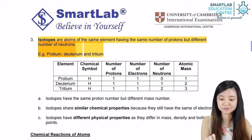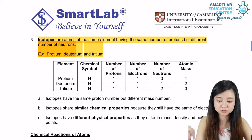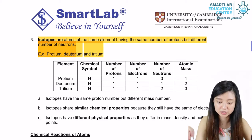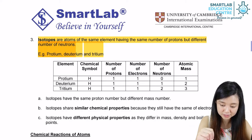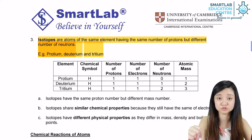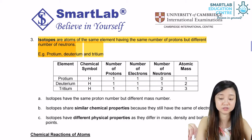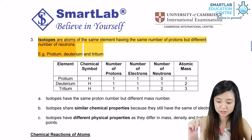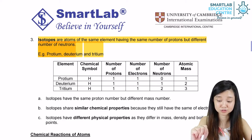Therefore, they have the same number of electrons, which is also one, but the neutron number is actually changing. For protium, they actually have zero neutrons. Deuterium has one neutron, and tritium has two neutrons. Therefore, their atomic mass will be different, as the atomic mass is the number of protons plus neutrons.